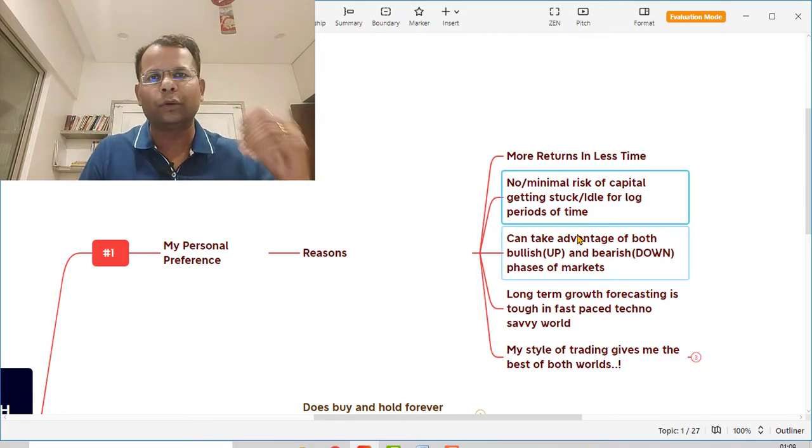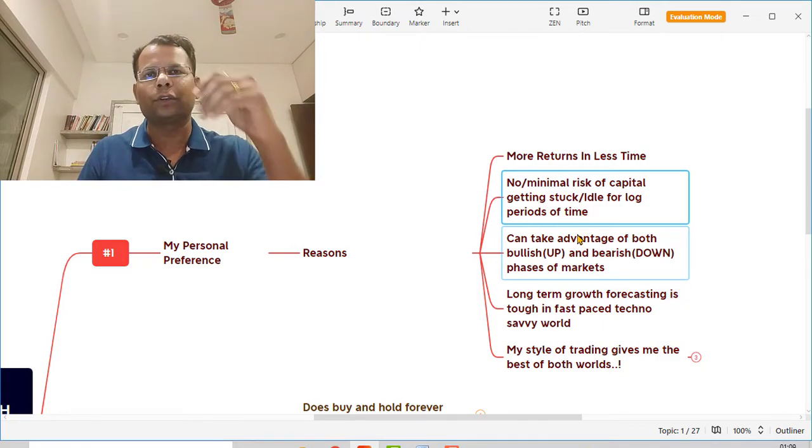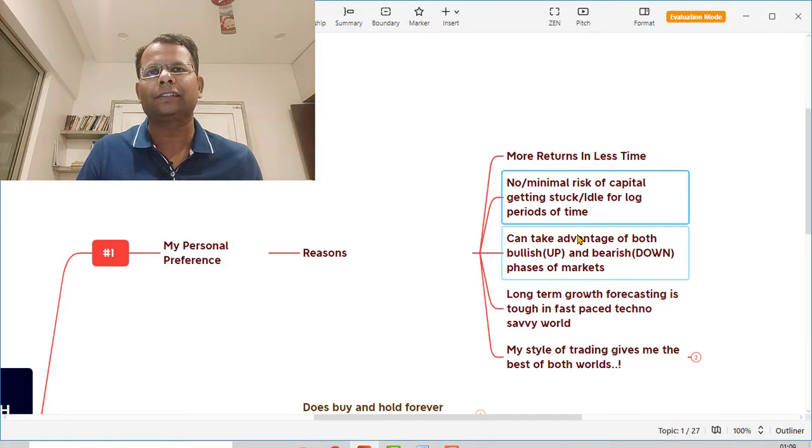Because in trading we are capturing the major trends, the momentum in the move of a particular stock, and then we are trying to avoid these phases of the stocks which are in the downtrend or moving against our direction, or when the stock is just sitting idle doing nothing, just consolidating.